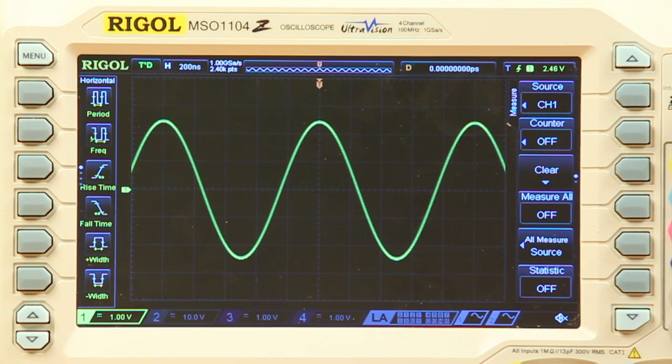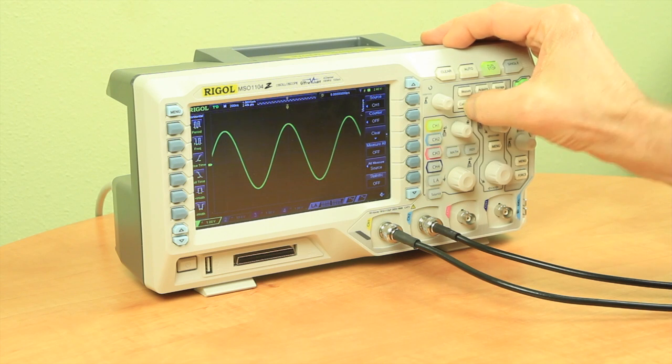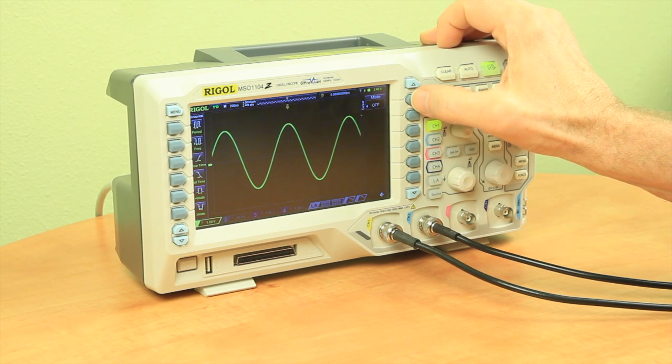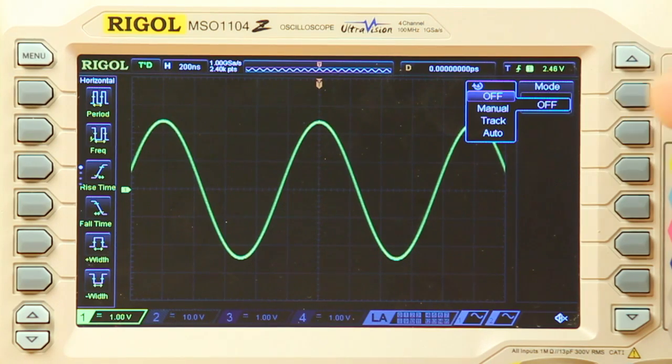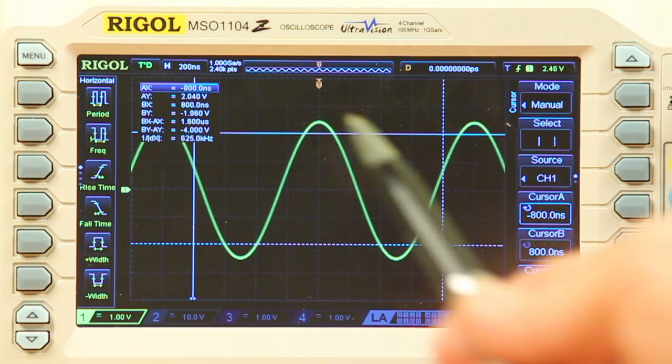Let's try them out. Now, here we have a 1 MHz sine wave being displayed on the scope. To select Manual mode, push the cursor button and select Manual. So, besides cursors showing up on the screen, you'll notice several readouts in the top left corner of the display.